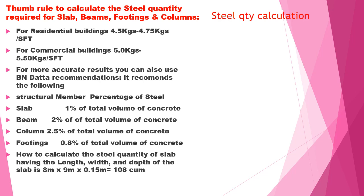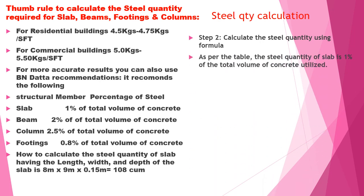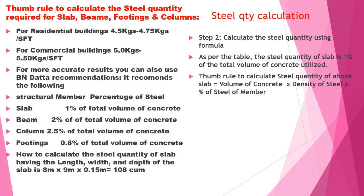To calculate the steel quantity of a slab having dimensions: length 8 m, width 9 m, and depth 0.15 m — the volume is 8 × 9 × 0.15 = 10.8 cubic meters. Using the formula as per the table, the steel quantity for a slab is 1% of the volume of concrete utilized.